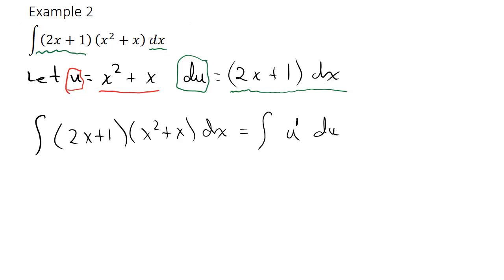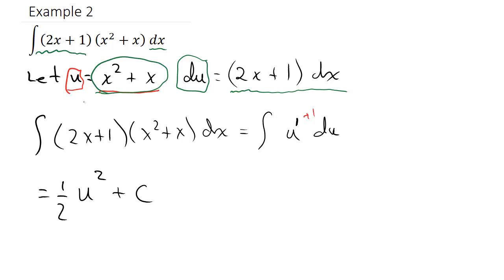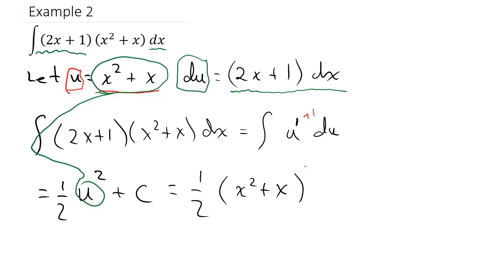Now I apply the power rule: add 1 to the exponent to get u squared, times the reciprocal 1/2, plus c. Getting back in terms of x — u is x squared plus x — so this gives me (1/2)(x squared plus x) squared, plus c.